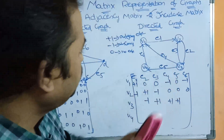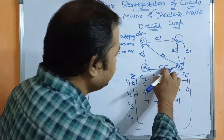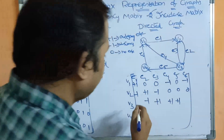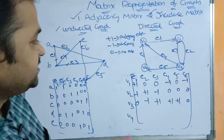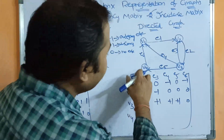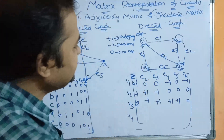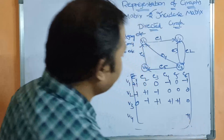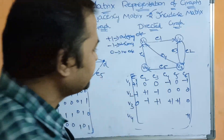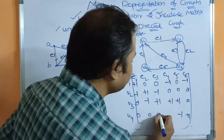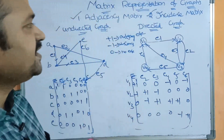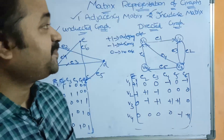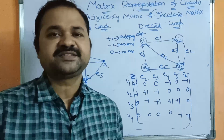For V4, E6 is an outgoing edge so plus 1, and E5 is an incoming edge so minus 1. Remaining values are 0. In this way we can construct an incidence matrix for a directed graph. So this is about matrix representation of graphs in discrete mathematical structures. Thank you.